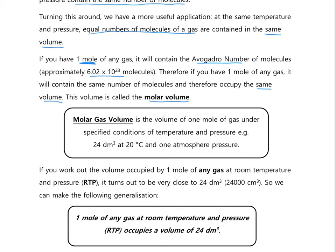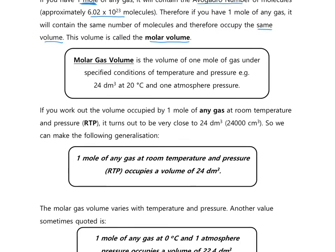There are two specific conditions you should learn the molar gas volume for. First, room temperature and pressure, sometimes abbreviated to RTP — that's 20°C (293 K) and one atmosphere pressure — where the volume of gas occupied is 24 dm³. That's a value you should be familiar with.